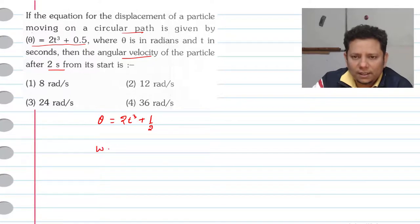Now, aapne ko pata hai omega. Usko hum likhte hai, then this will be equal to d theta divided by dt. Isko jahan differentiate karenge, toh iski value hai gai ki 6t².